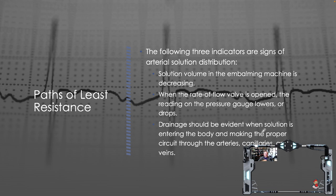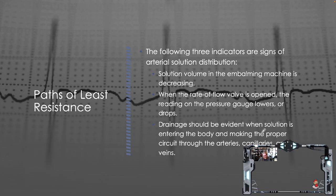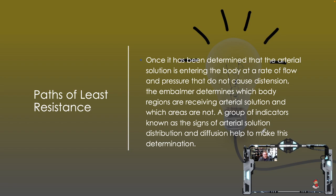The third indicator is that drainage should be evident when solution is entering the body and making the proper circuit through the arteries, capillaries, and veins. Drainage can come out visibly, or you may see abdominal swelling and need to gauge whether that is drainage into the abdominal cavity or the visceral expansion discussed earlier. Once it has been determined that arterial solution is entering the body at a rate of flow and pressure that do not cause distension, the embalmer determines which body regions are receiving solution and which are not.